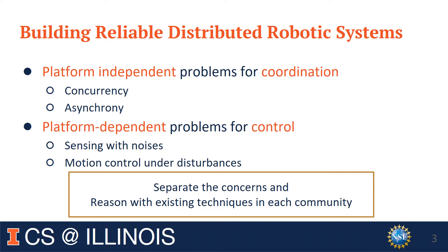Our goal in this work is to investigate if there are clean abstractions so that we can achieve separation of concerns, and reason about each correctness aspect using existing techniques from the respective community. Our main insight is that the correctness argument for distributed coordination will be the same regardless of the vehicle platforms — that is, these correctness arguments should be platform-independent, and can be separated from platform-dependent concerns such as motion control and sensing.